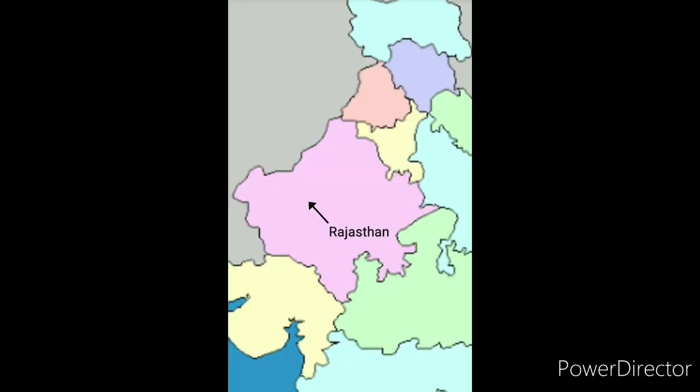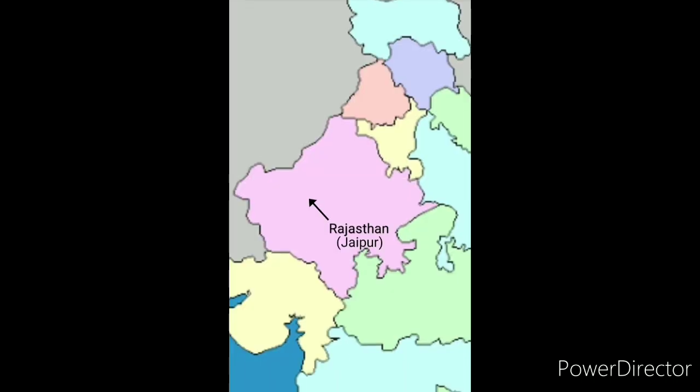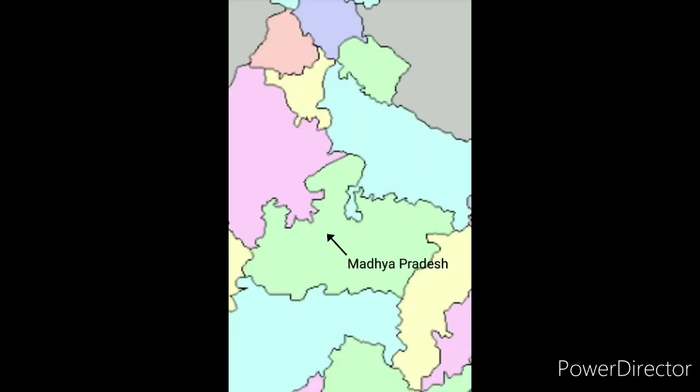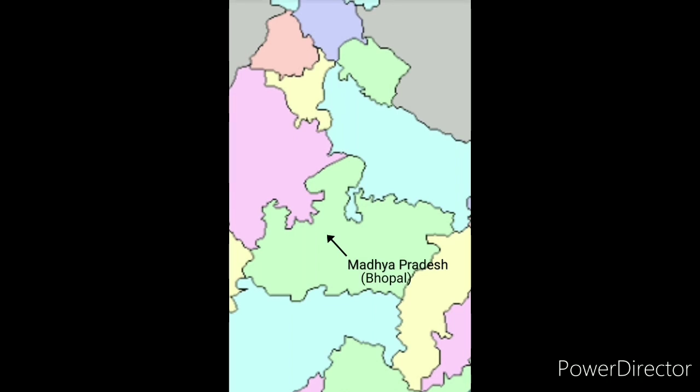Coming to the left we have Rajasthan and its capital is Jaipur. Then we have Madhya Pradesh at the center of India and its capital is Bhopal.